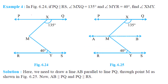In figure 6.24, if PQ is parallel to RS, and angle MxQ is 135 degrees and angle MyR is 40 degrees, we have to find angle XMY. Let us draw a line through M which is parallel to both lines. This gives us 135 degrees on one side.